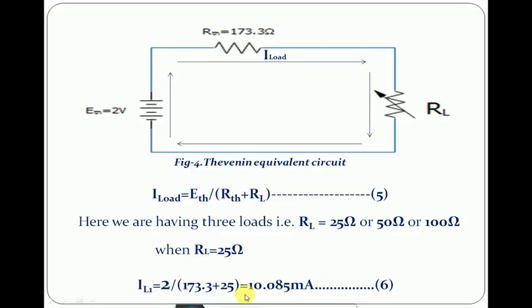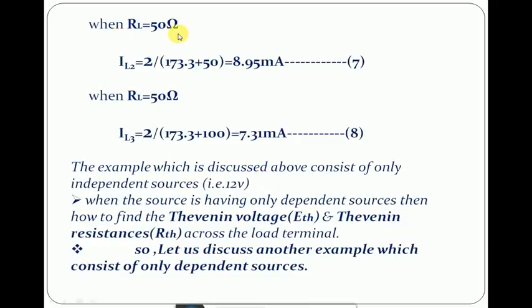When RL = 25 Ω, IL1 is calculated as 10.085 mA. When RL = 50 Ω, IL2 is calculated as 8.95 mA, and when RL = 100 Ω, IL3 is calculated as 7.31 mA. The above example consisted of only independent sources. We will now go to another example where dependent sources are available, and discuss how to find the Thevenin equivalent voltage and Thevenin equivalent resistance across the load in that case.